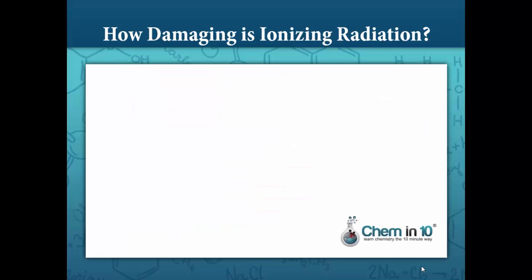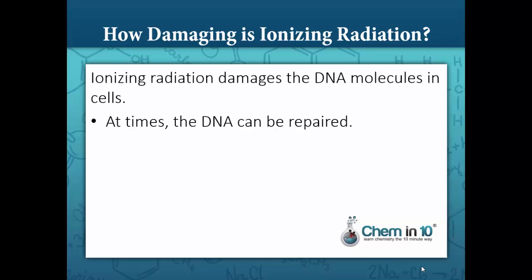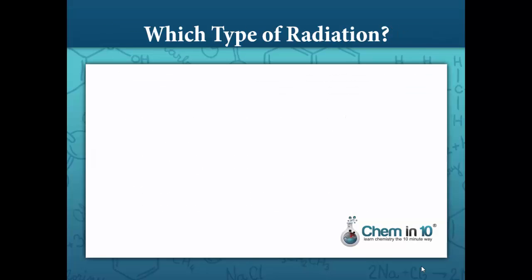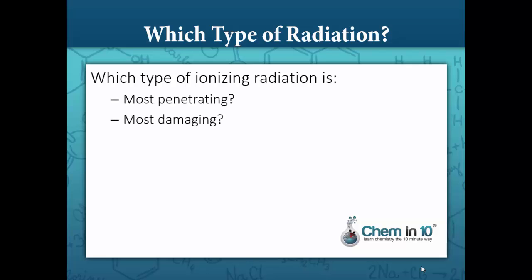So just how damaging is ionizing radiation and how does it do its damage? Ionizing radiation damages the DNA molecules in cells. At times, the DNA can be repaired. If the damage is irreparable, the cell may undergo cell death or the cell may pass on this DNA mutation in subsequent cell divisions often resulting in cancer. So we're left with the question, which type of ionizing radiation is the most penetrating and the most damaging?